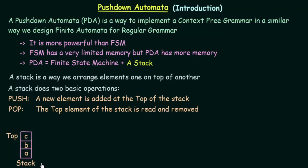Here is a diagram which depicts a stack. As mentioned, a stack is a way we arrange elements one on top of another. We have three elements A, B, and C put one on top of another. You can imagine this as a pile of books — we put one book on top of another. The top-most element is denoted by 'top'. Now let us see how the Push and Pop operations work on a stack.